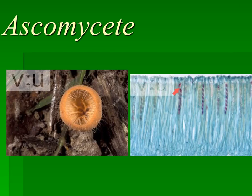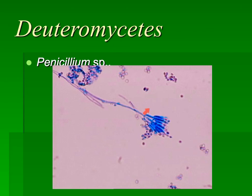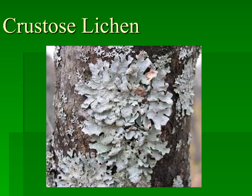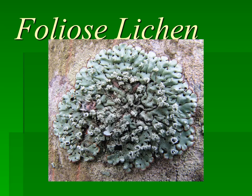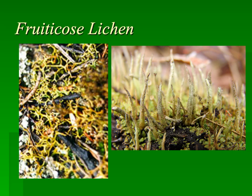Here we have penicillin, which is deuteromycetes, or our fungi imperfecti. Lichen is a relationship between an algae and a fungus — as the joke goes, they took a lichen to one another. There are three types of lichens: crustose lichen, which is crust-like; foliose lichen, which is smoother and more plant-like; and fruticose lichen.